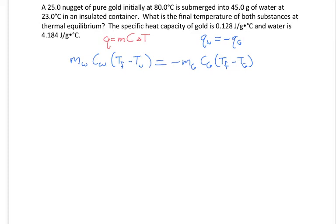Now, if I go ahead and plug in my numerical values for these quantities, I have 45 grams of water, a specific heat capacity of water. And then T_f is what we're solving for. The initial temperature for the water is 23 degrees. And do the same for the gold.